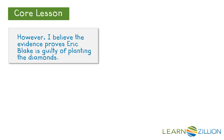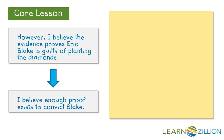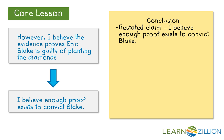Let's reread the claim from our introduction: 'However, I believe the evidence proves Eric Blake is guilty of planting the diamonds.' What's another way to say this? I want to use different words than the ones I used in the introduction, so let's start with this: 'I believe enough proof exists to convict Blake.' As we write our conclusion, we will revisit this restated claim and try to make it as strong as we can. Let's make a note of it so we can keep it in mind as we plan the rest of our conclusion.